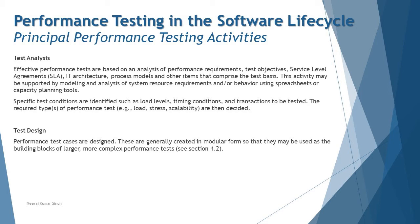Specific test conditions are identified during test analysis, such as load levels, timing conditions — how long a test needs to run — and transactions to be tested, for example withdrawing money from an ATM, mini statement generation, PIN changes, or fund transfers. You determine which transactions are in scope. User personas are defined, such as one user withdrawing money and another generating a mini statement. The required types of performance tests are also defined here — load test, stress test, scalability, volume, endurance, spike — defining the full scope of performance testing.